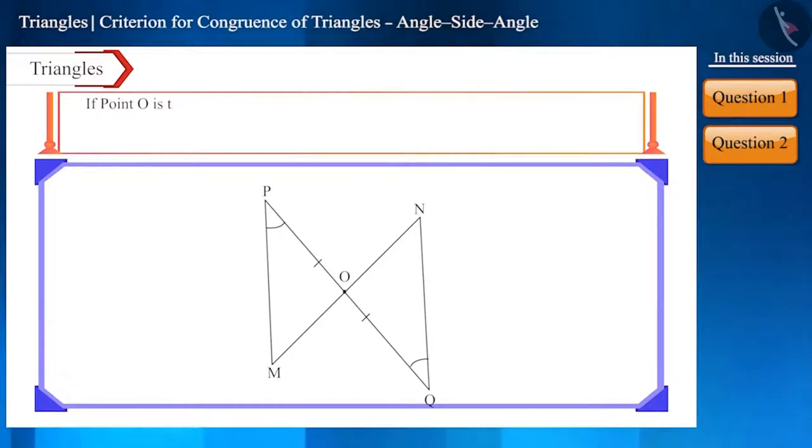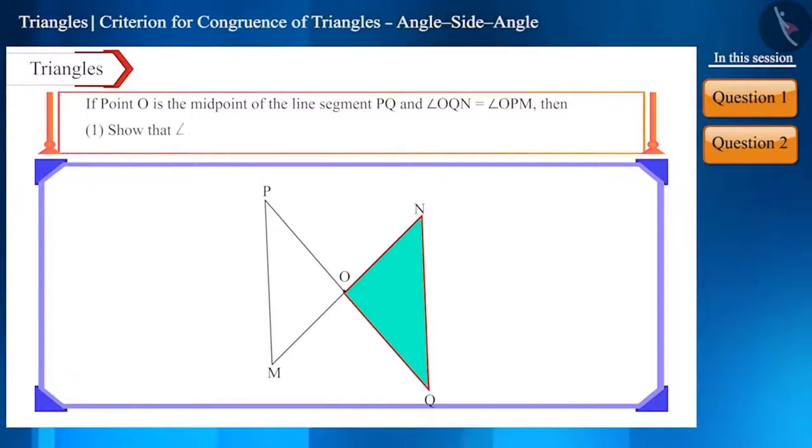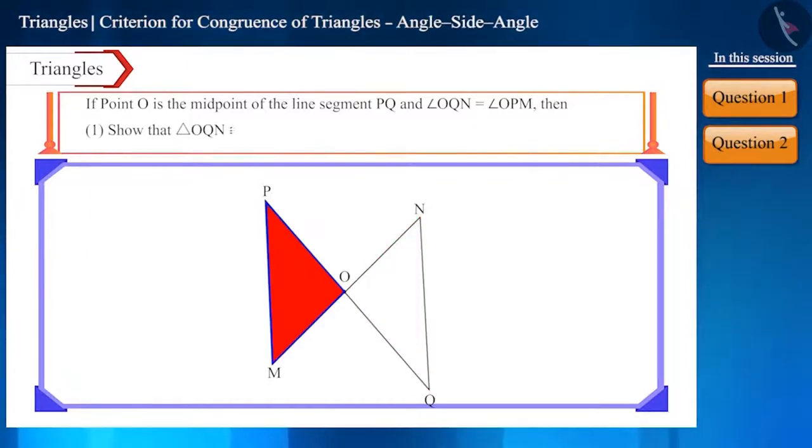In the figure, if point O is the midpoint of the line segment PQ and angle OQN is equal to angle OPM, then show that triangle OQN is congruent to triangle OPM and tell the relationship between sides MO and NO.